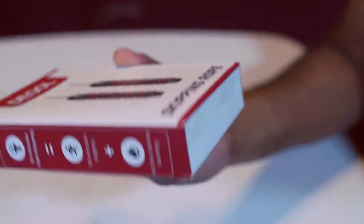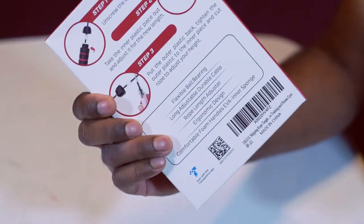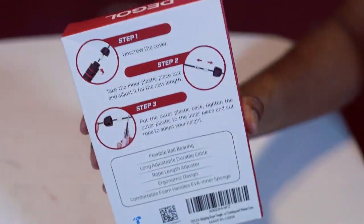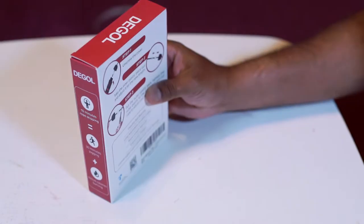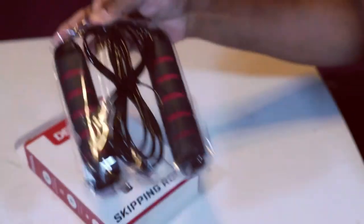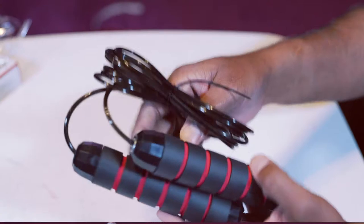This is skipping rope with ball bearings. Let's open the box. There it is, it comes fully assembled.